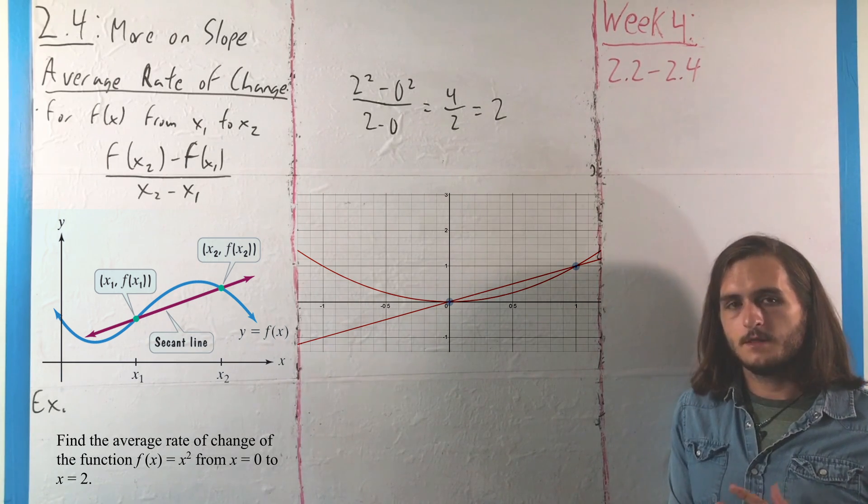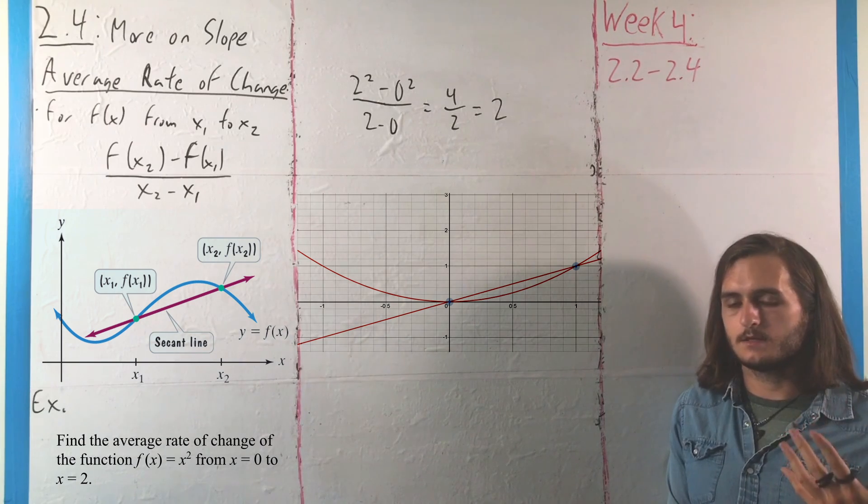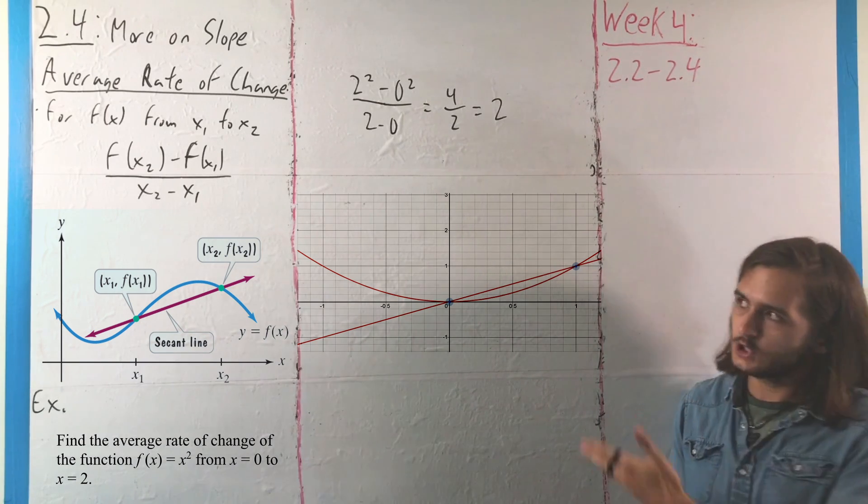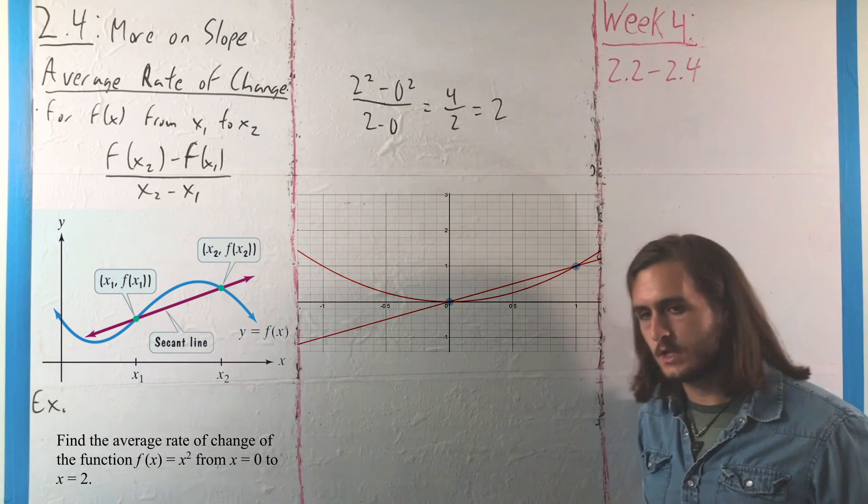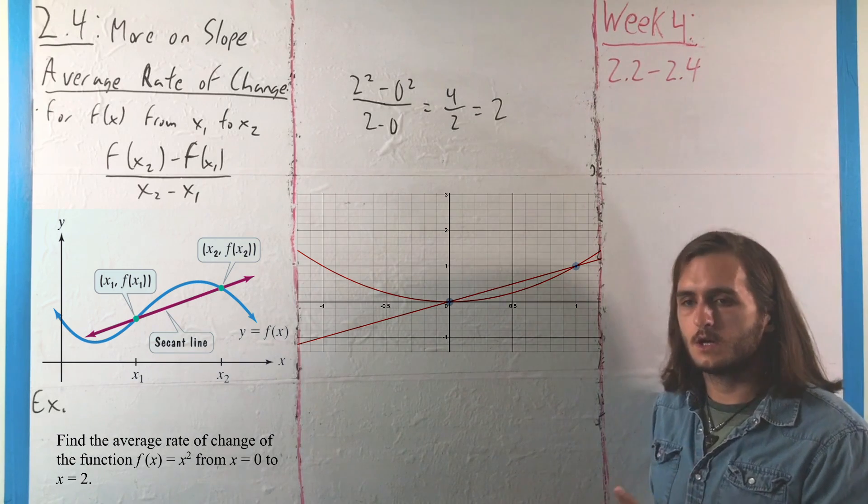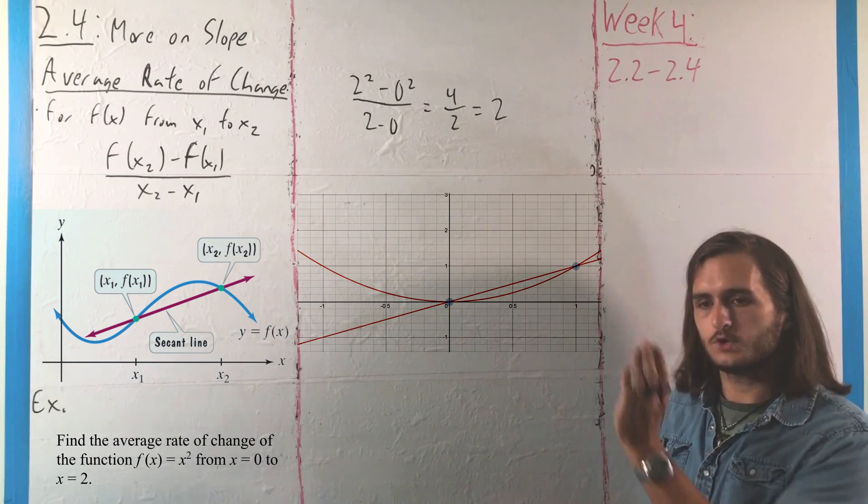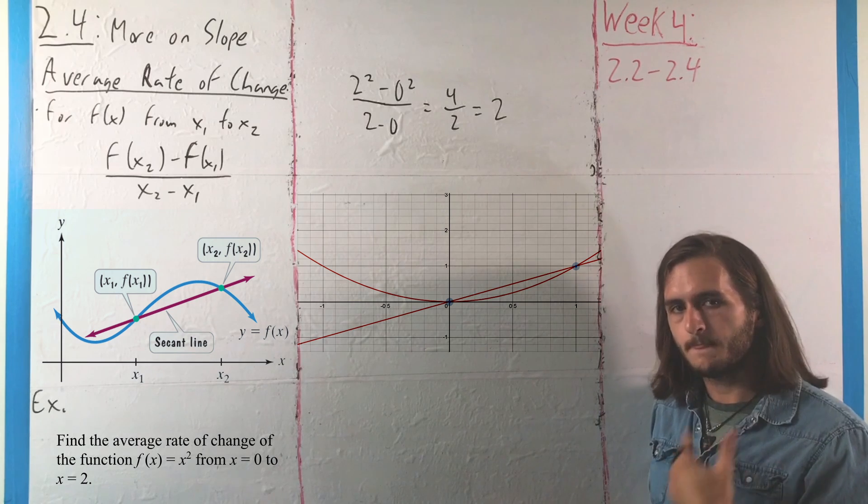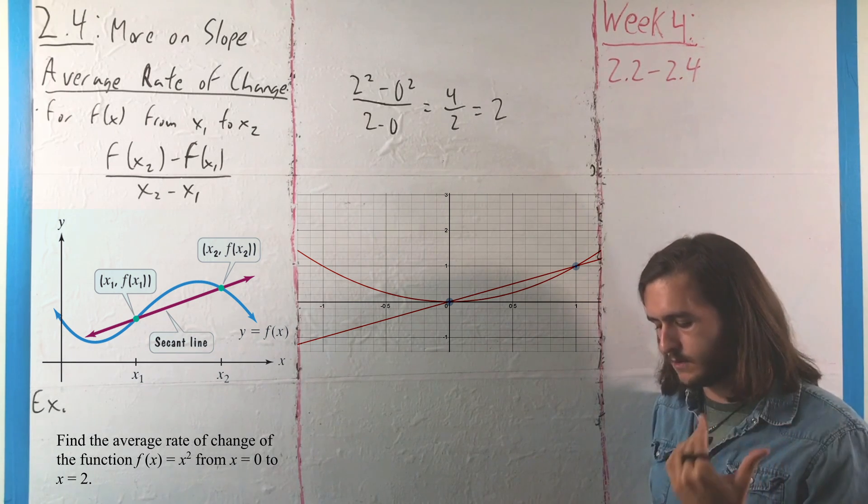Point is here, the idea of looking at what goes on as h gets small, like we talked about earlier, is the same as trying to talk about what happens with an average rate of change as the gap for our average gets smaller and smaller.